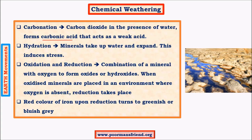Oxidation happens with all kinds of rocks but is quickest in rocks containing metals such as iron and magnesium. Both oxidation and reduction are largely irreversible — iron converts to iron oxide but iron oxide cannot easily be reduced back to iron. In reduction, in the absence of oxygen, iron oxide undergoes reactions forming different combinations such as FeO, which are weaker and more vulnerable to weathering. The red color of iron upon reduction turns greenish or bluish.